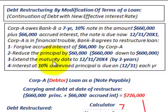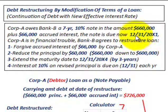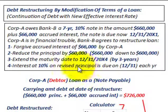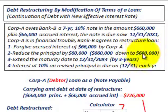They're going to extend the maturity date to 12-31-20x4. It's currently due at 12-31-20x1, but it's going to be extended 3 years to 12-31-20x4. The interest is going to stay the same on this note at 10%, but it's going to be based on the revised principal amount reduced to $600,000.